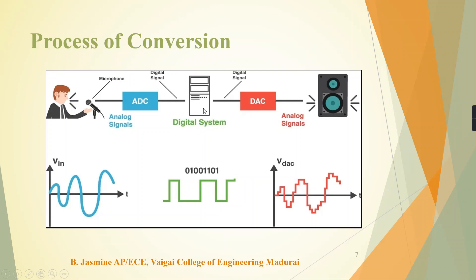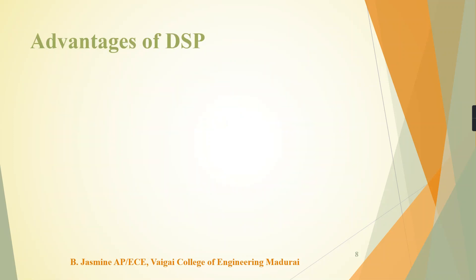The digital system processes the signal and the output is given to the DAC — the digital-to-analog converter. The speaker then receives the analog signal from the DAC and plays it back.